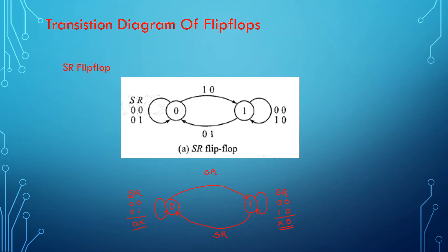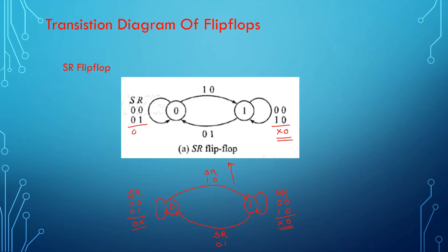If the present state is 0 and the flip-flop has to change state to 1, you need to give input as 1,0 — it must go from reset to set. If the present state is 1 and it has to change to 0 — going from set state to reset state — you need to give input as 0,1. So this transition diagram tells you what possible input combinations can be given to retain the same state or to transit from one state to another.